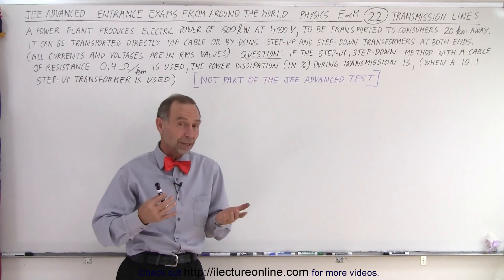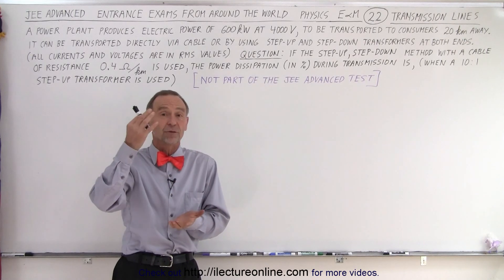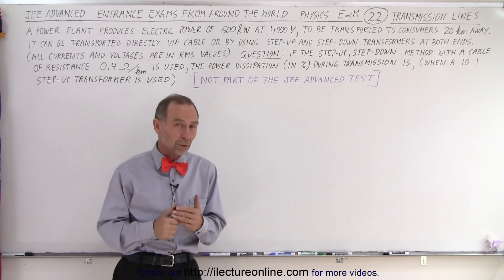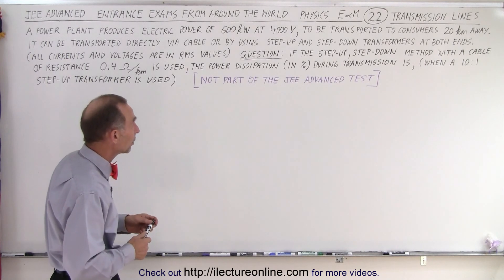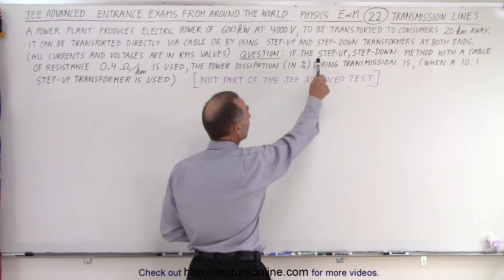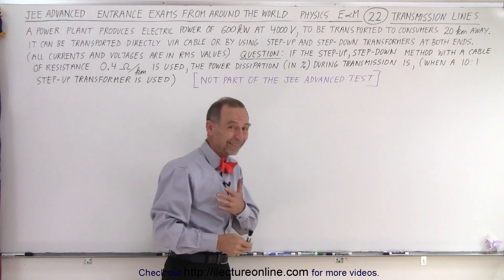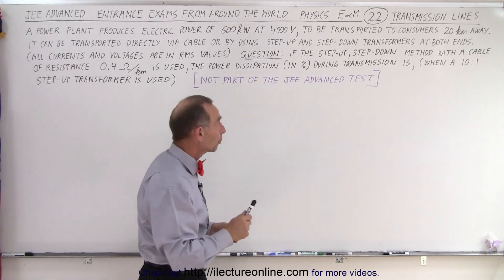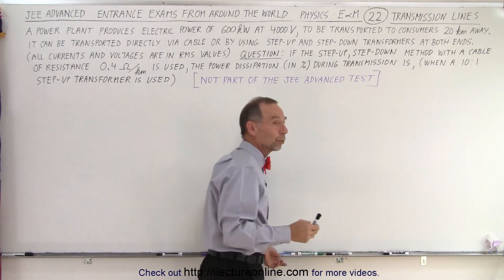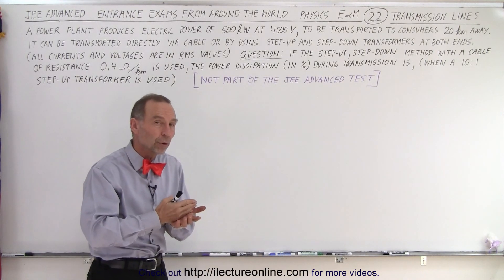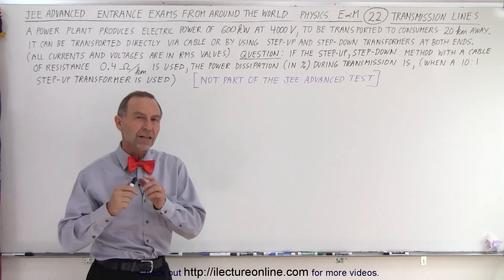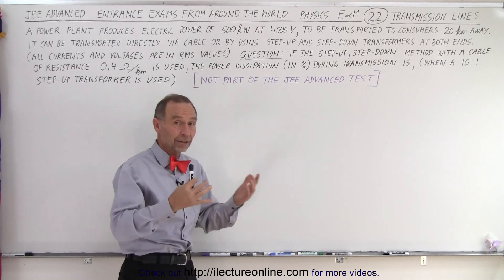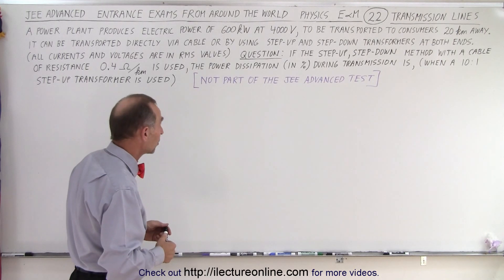On the previous video, we realized that by not stepping up the voltage, by keeping it at 4,000 volts, we're losing 30% of the power. So what we're going to do now is we're going to use the step up, step down method with the same cable, but we're going to use a 10 to 1 step up. In other words, we're going to go from 4,000 volts to 40,000 volts. How will that change the amount of heat lost, the amount of energy lost on transmission?